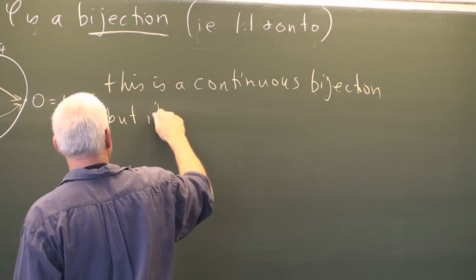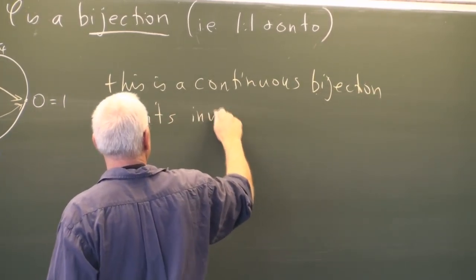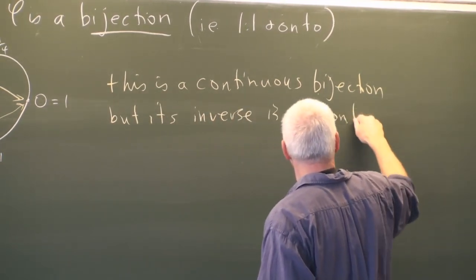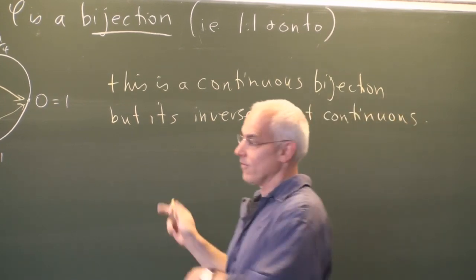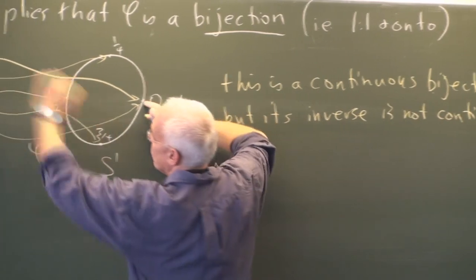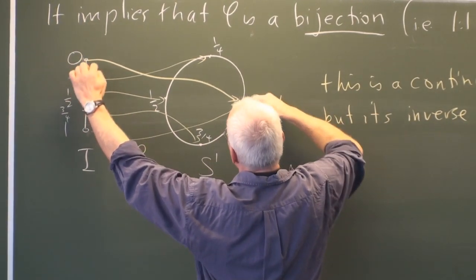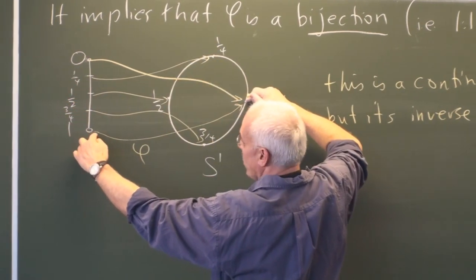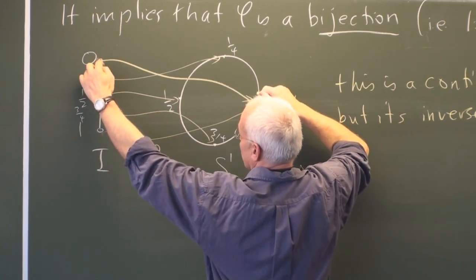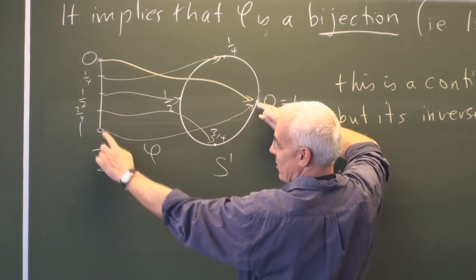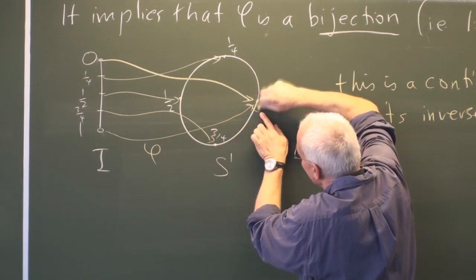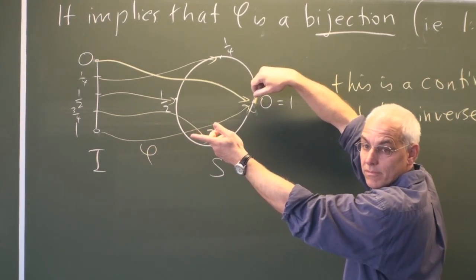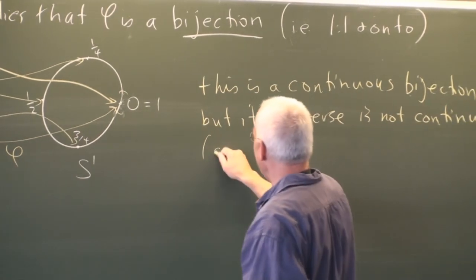But the inverse is not continuous. The inverse map reverses things: the inverse of 0 would be that point here. As we go continuously near 0 on one side, we map to points near that end; but on the other side of 0, we're mapping to points near the other end. So restricting to a little neighborhood there, it's not a continuous map — the inverse is not continuous at the point 0.